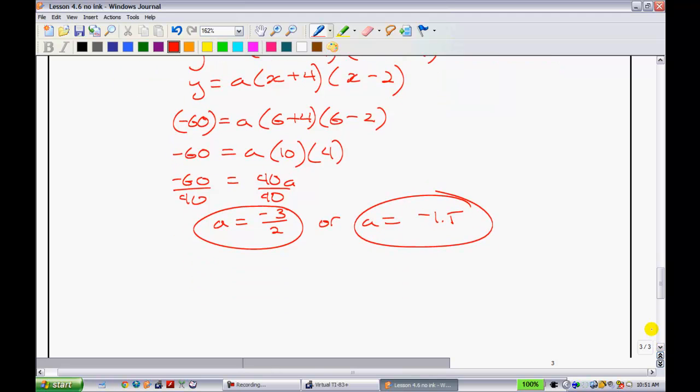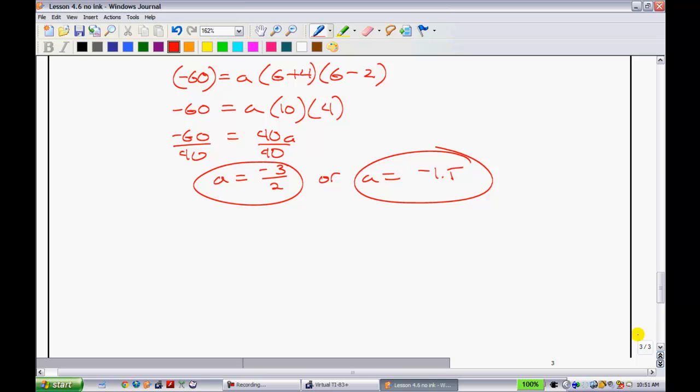Okay. So, the next thing that we have to do is, they did say that they wanted you to put it into general form. So, the equation that I have right now is sitting here like so. It'd be, maybe I'll do it in black from here on out. So, y is equal to -1.5, bracket (x plus 4)(x minus 2).